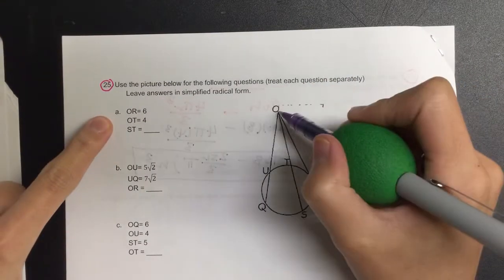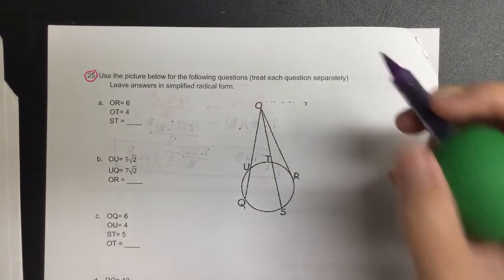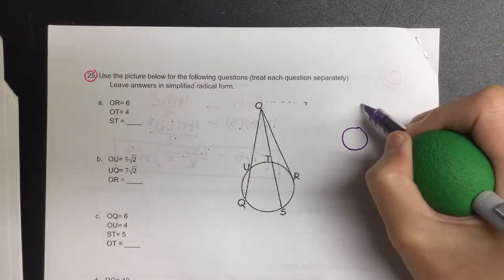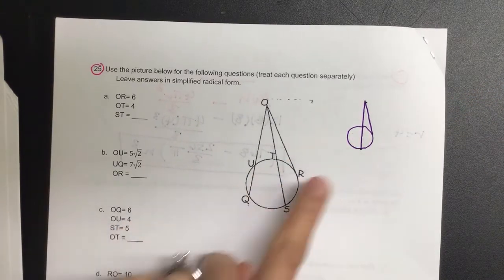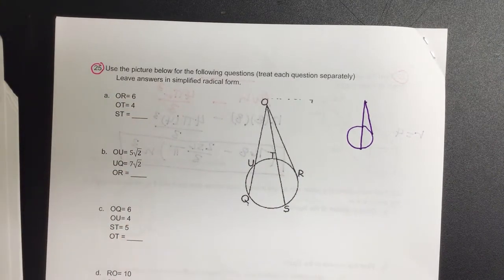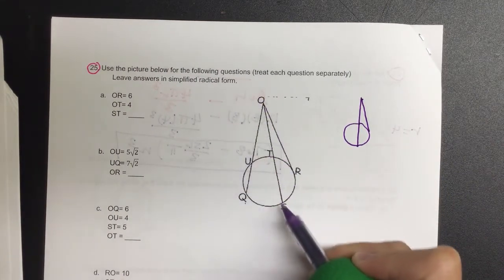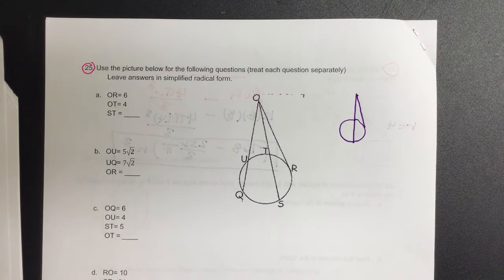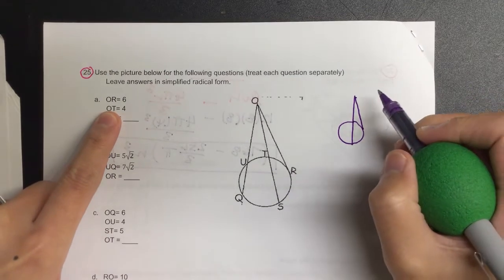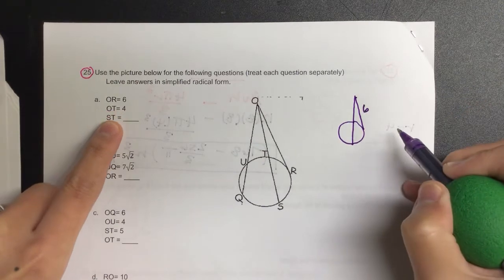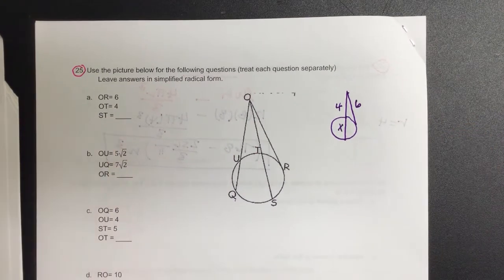So in this case, I know I need OR, and I know I need OT. Do I need anything for OQ for part A? Nope. So let's redraw this. Here's my circle. I need something on the outside, something somewhere in the middle. I'm just mimicking this because this is a figure for all four of them. So OR is 6, and OT is 4, and we're asking for TS, which is our X.